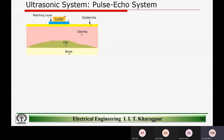We talked about the matching layer and why it is important — what should be the acoustic impedance of the matching layer in correspondence to the characteristics of the transmitter and the next medium. We derived a relation between that. Typically this can be PVDF material or a gel that can be put. Then we have the skin, epidermis, dermis, fat, and bone — this is the cross-section of the body.